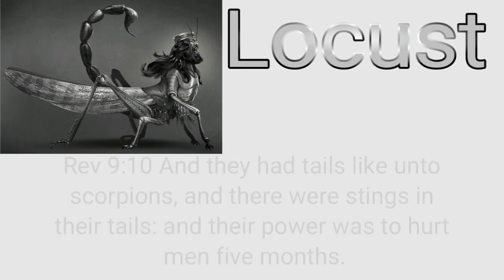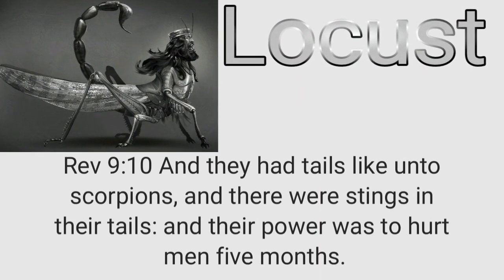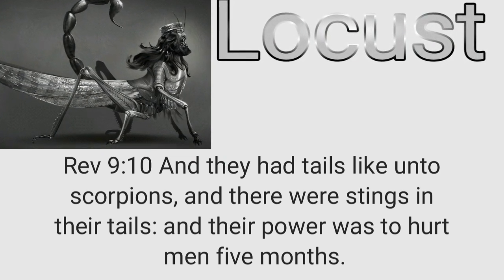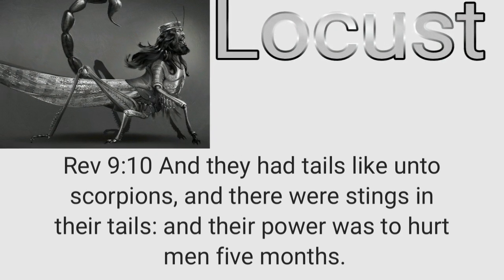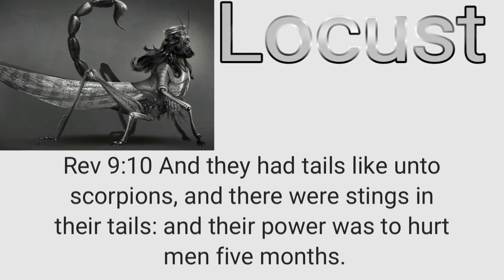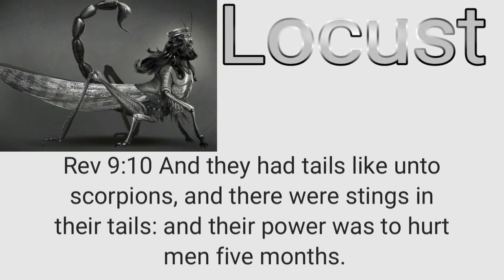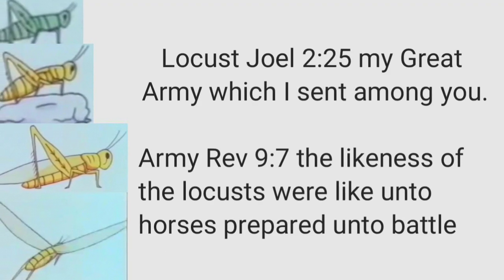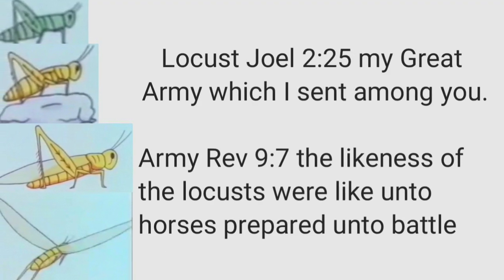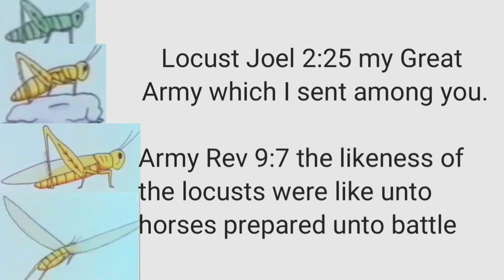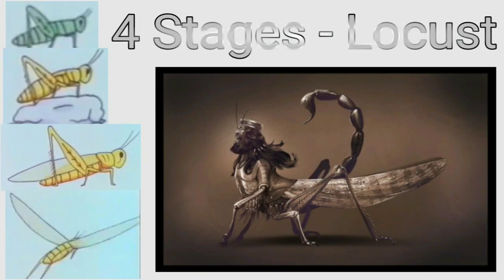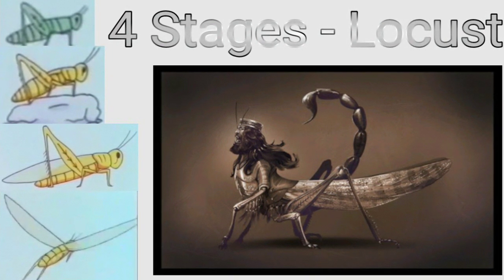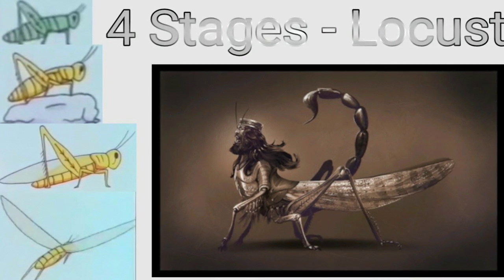The same thing is seen in Revelation 9:10: 'They had tails like a scorpion, and their stings were in their tails, and their power was to hurt men five months.' So we have four stages of locusts, and each stage has a sting that takes place for five months — so that must take place over years. It is an army. Joel 2:25 says, 'The great army which I sent among you,' and in Revelation the locusts are an army: 'The likeness of the locusts were like horses prepared for battle.' So these are the four stages, or variants, of the locusts, for he who has ears and eyes to see.